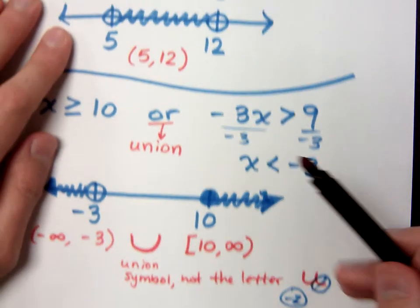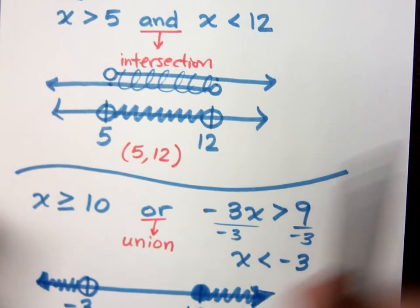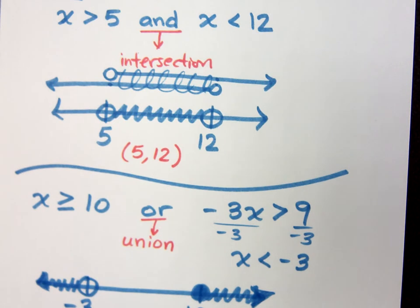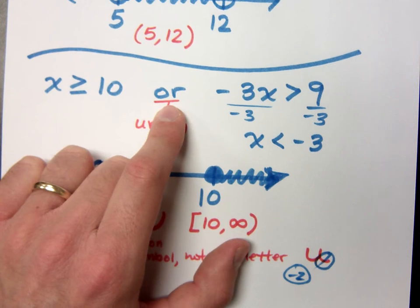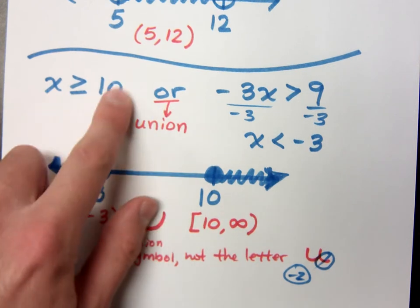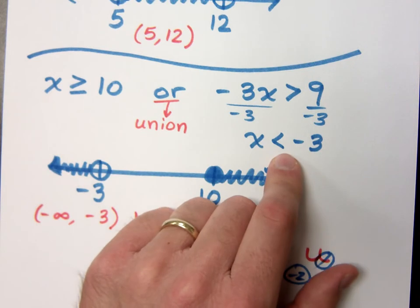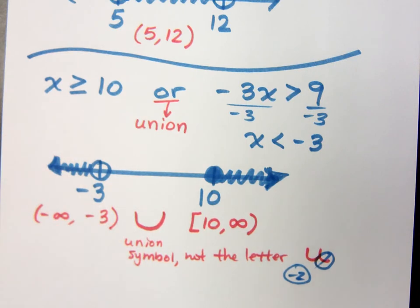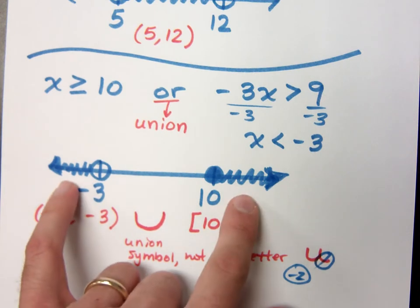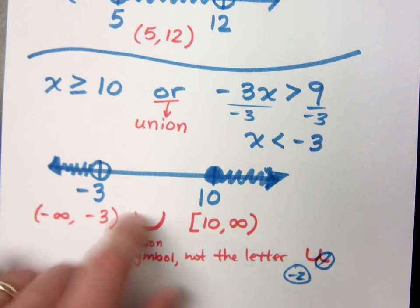So, intersection and union are a lot like when you see prerequisites for a class. If a class says that a prerequisite would be this class and another class, well, that means you have to have taken both of those guys. But if it said or, it just has to be one or the other. And when I look here, my solutions, my x has to satisfy being greater than or equal to 10, or less than negative 3. You're not going to find a number that satisfies both of these, but just one of them. As long as you satisfy one of them, then that's part of your solution set. So, I've got these two intervals right here. Since these guys both represent my solution, but they're disconnected, I use this union symbol to join those guys together.